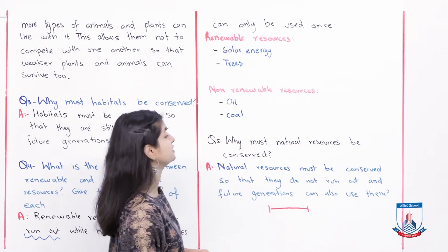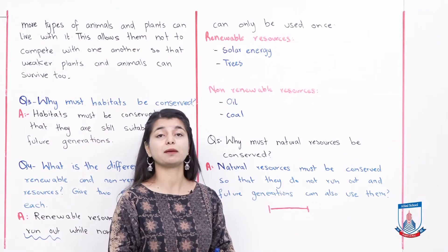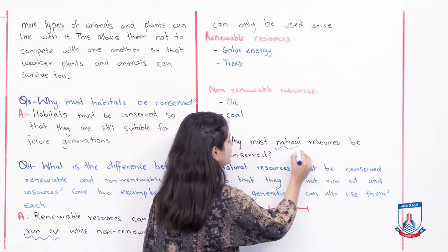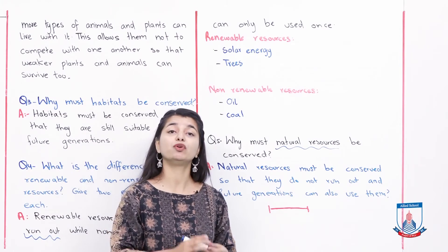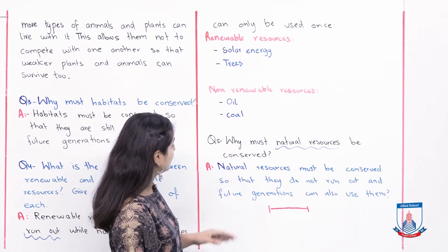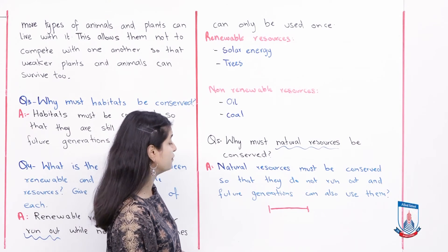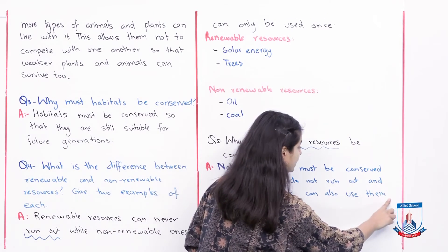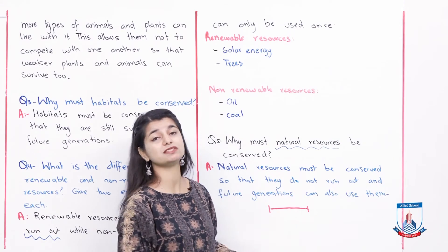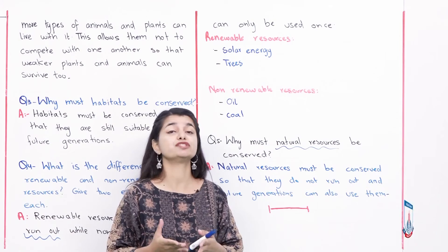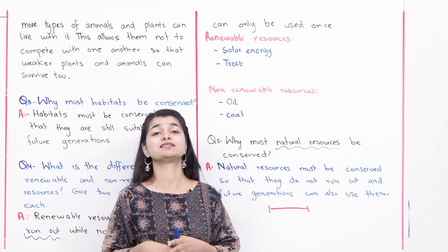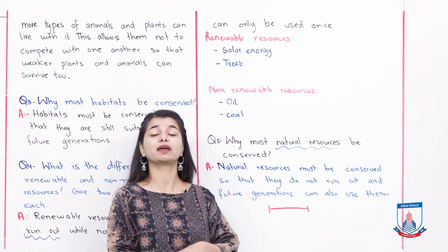The last question: Why must natural resources be conserved? Like we have talked about conserving habitats — same reason. We don't have to finish them. If they come to future generations, they don't have to face difficulties because we left nothing for them. Natural resources must be conserved so that they do not run out and future generations can also use them. Because we are not selfish — we also care about our future generations. We don't want to use all of our resources today.